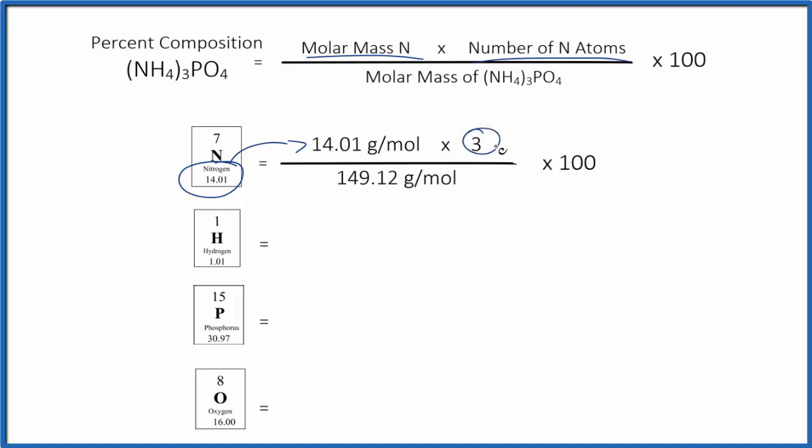Then after we multiply these numbers together, we divide by the molar mass of ammonium phosphate. If you need help with that, there's a link at the end of this video. That's 149.12 grams per mole. And you'll note we have grams per mole on the top and the bottom. Let's just cancel those out. So we multiply, get that number, divide, multiply by 100 to get 28.19 percent.